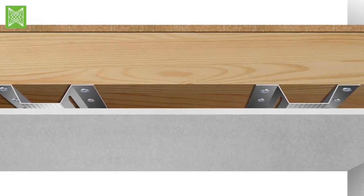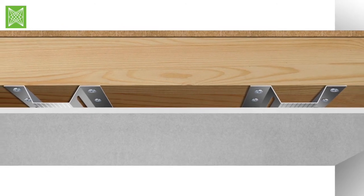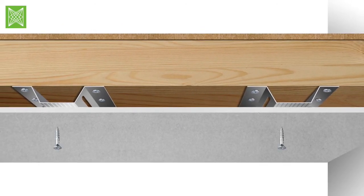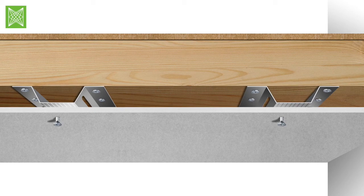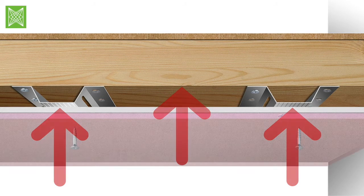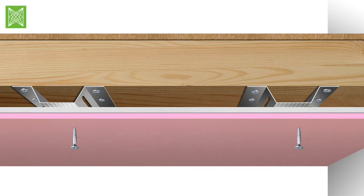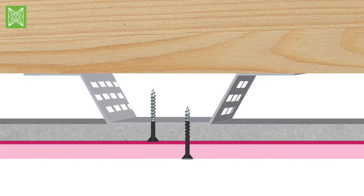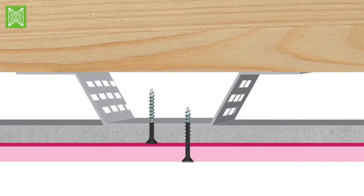Offer up the first sheet of plasterboard to the underside of the HUSH Deep Resilient Bars and fix using drywall screws. It is imperative that the plasterboard is fixed to the HUSH Deep Resilient Bar only and not through to the timber joist. Offer up the second sheet of plasterboard to the underside of the first sheet, fix through to the resilient bar avoiding contact with the timber joists. Ensure that all plasterboard joints are staggered.